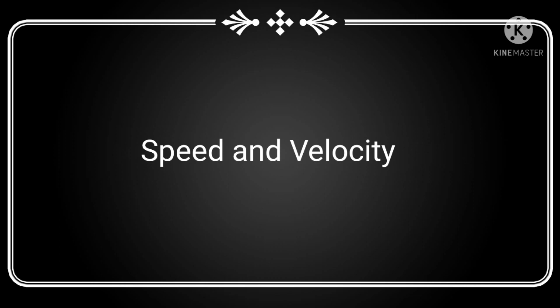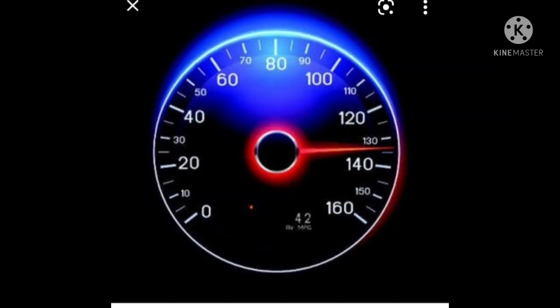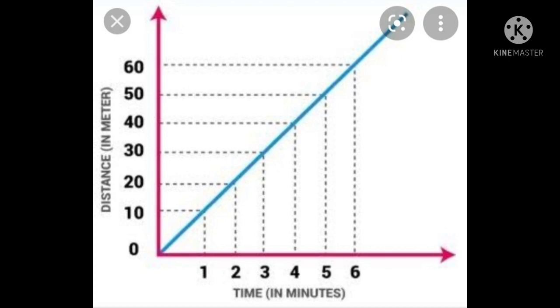Speed and velocity: the speed at any instant is called instantaneous speed. You can describe the motion of a car moving along a straight road with varying speed using a distance versus time graph. Speed is measured using a speedometer. On the graph, the x-axis represents time in seconds and the y-axis represents distance in meters.